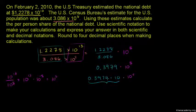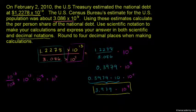That's 3.979 times 10 to the 4th power. Now converting to decimal notation, 3.979 times 10 to the 4.